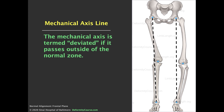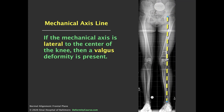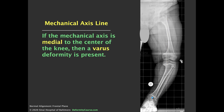The mechanical axis is termed deviated if it passes outside of the normal zone. Valgus is present if the mechanical axis passes lateral to the knee joint. If the mechanical axis passes medial to the center of the knee, then a varus deformity is present.